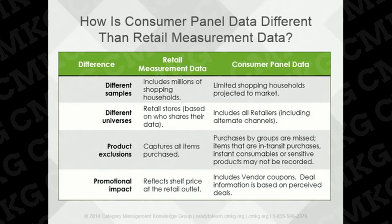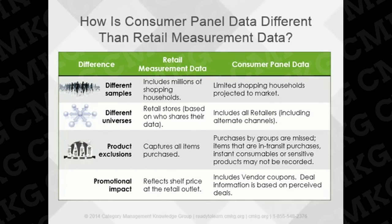It's important to understand how consumer panel data differs from retail measurement data. Retail measurement data records millions of shopping households, while consumer panel data records shopping behavior of a limited number of shopping households that's projected up to a total market. Retail measurement data is limited to a retail store set — sometimes not all retailers are included. Consumer panel data includes all retailers, including those from alternate channels. There tend to be more product exclusions in consumer panel data, because any purchases made by businesses, clubs, or groups that shop in retail are missed.